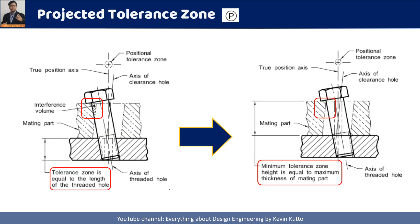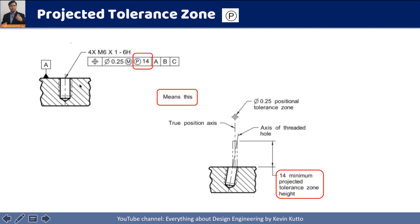The next symbol is the projected tolerance zone. We use this when two parts are assembled together — the first part has a threaded hole and the second part has a clearance hole. When assembled with a bolt, there can be a condition of interference. Because the designer of one part may not be aware of the other part, the projected tolerance zone concept is used to remove that ambiguity and avoid interference.